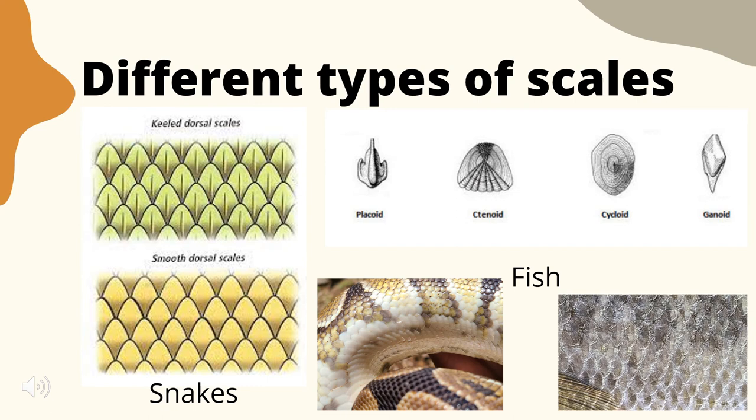There are different types of scales for both snakes and fish. Snakes have both smooth and keeled scales. The snake with smooth scales appears shinier, while keeled snake scales have duller coloring. The fish scales shown on the bottom are called ctenoid scales. Each different scale type has different features that allow it to be better suited for the animal's environment.